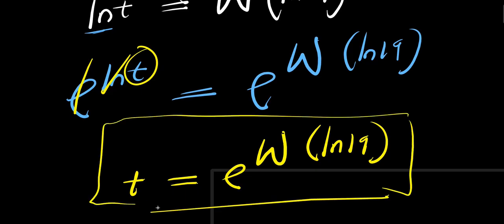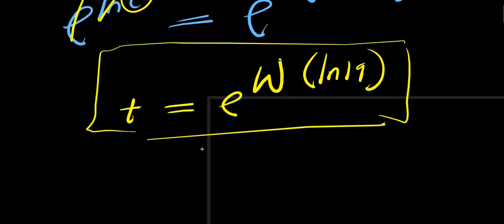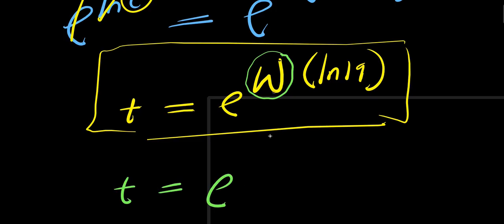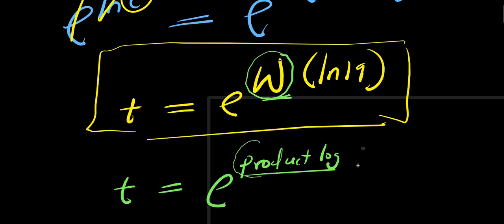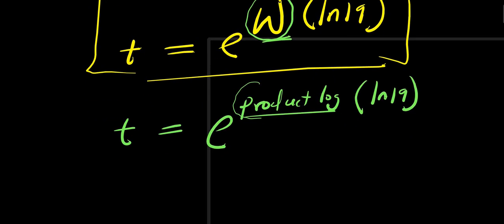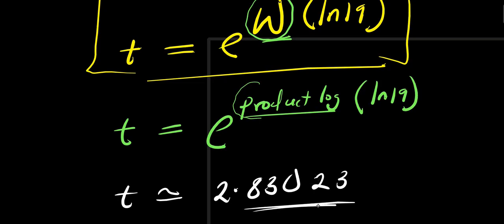You can type this into your calculator to get an approximate value of t. If you don't find the Lambert W function directly, you can use what is called the product log — that's just another name for the Lambert W function. Almost all scientific calculators have this. So you type e to the power of product log of ln 19 into your calculator, and you are going to get an approximate value of t which is about 2.83023, to five decimal places.